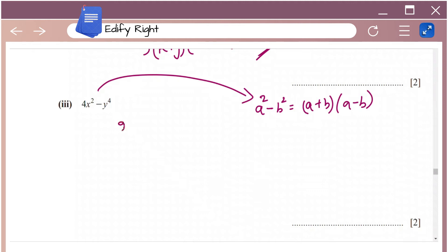So I can just write 4x square as 2x whole square, minus y power 4 as y square whole square. So if you observe this expression, it's in the form of a square minus b square. So I can open the brackets and write it as a plus b into a minus b. So that is 2x minus y square into 2x plus y square. So that's how you factorize this.